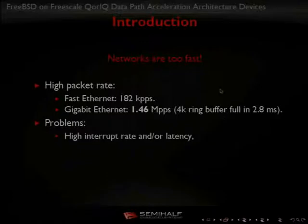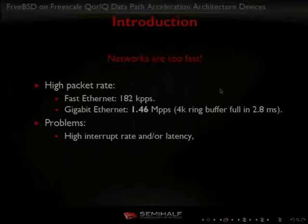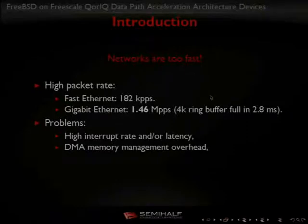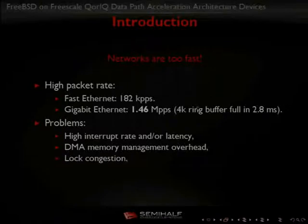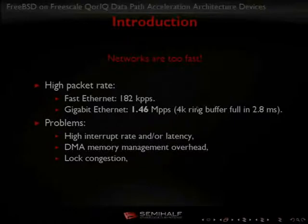Where are the problems? First, we can have either high interrupt rate or high latency. Either we have one interrupt per packet and kill the machine with interrupts, or we have one interrupt per thousand packets and latency increases. The next problem is the overhead of managing DMA memory for the network interface — we need to allocate buffers and check if the card finished transmission and free the buffer. Also, because there is a single structure for each interface, we have lock contention when more than one core tries to access it. Even with 8 or 16 cores, only one core can really access that data structure.